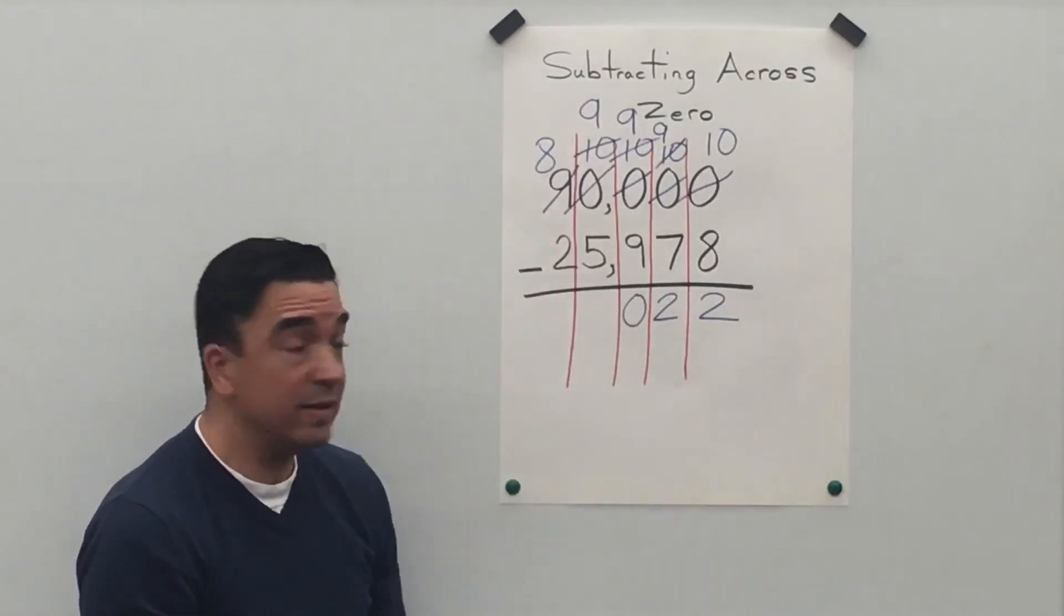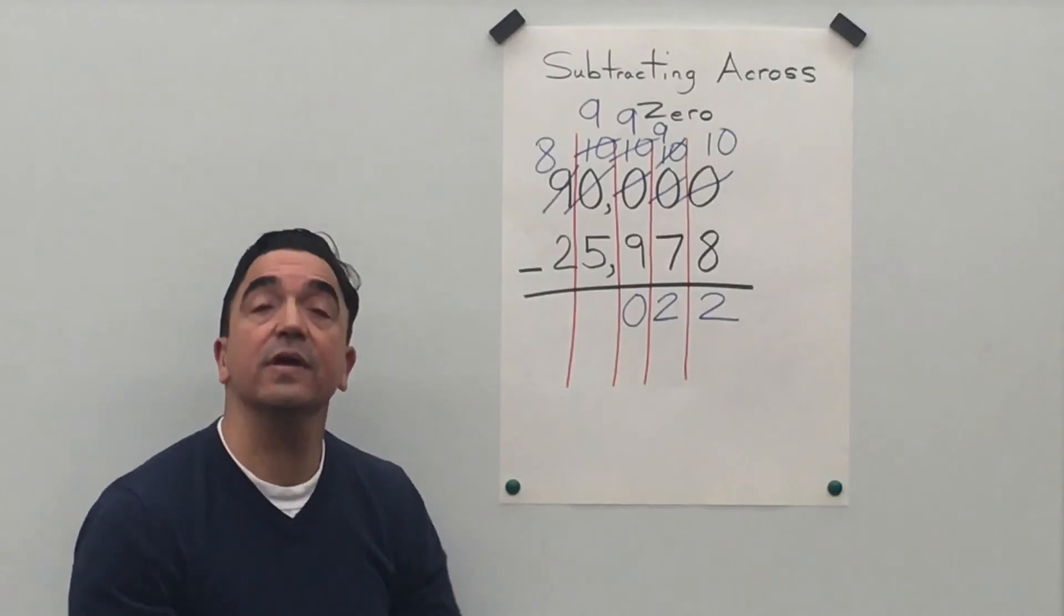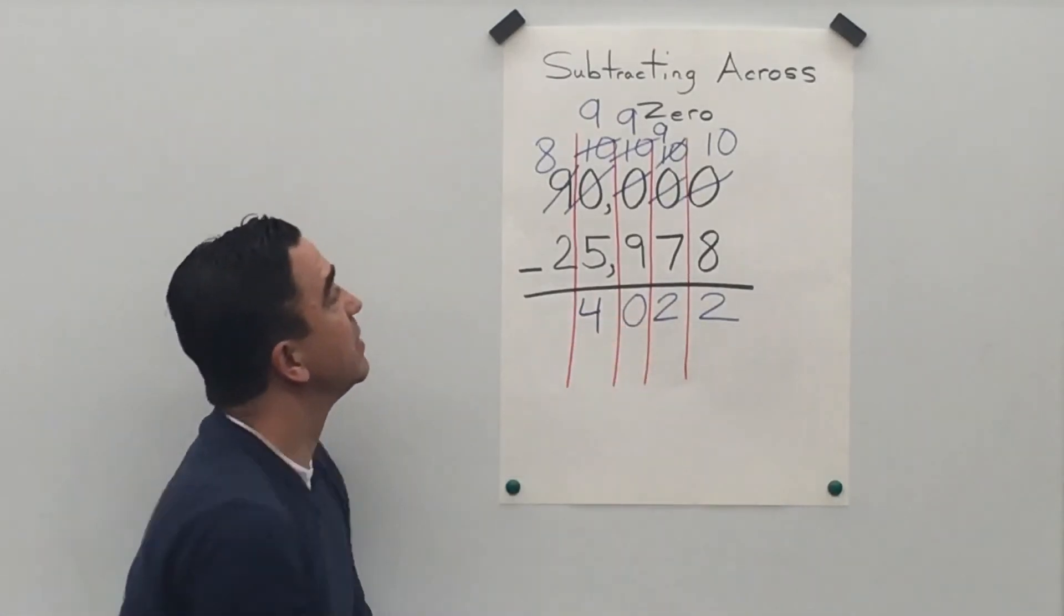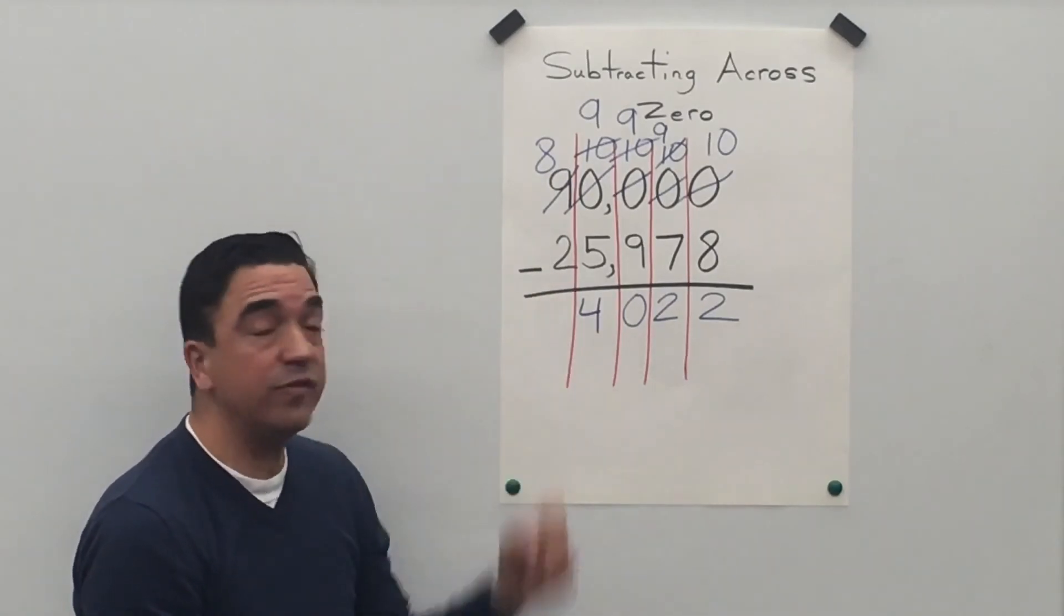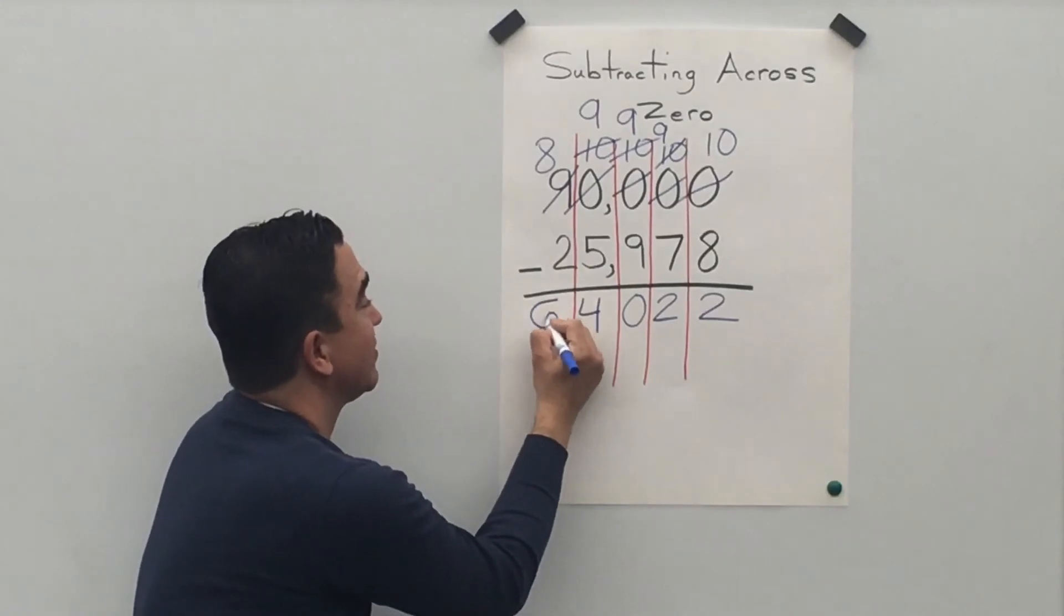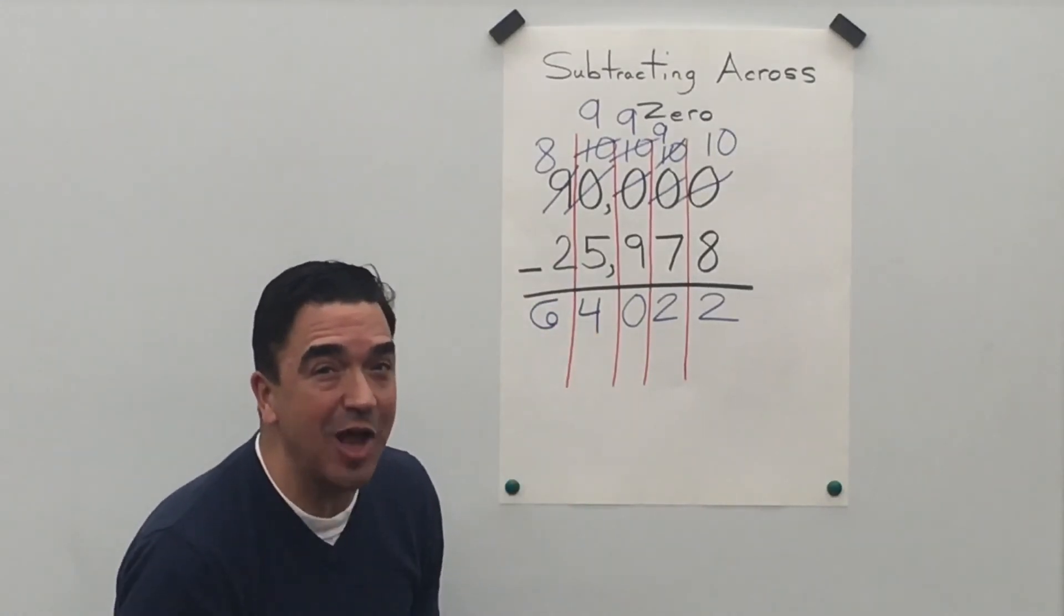Nine minus five is four. Eight minus two is six. Don't forget your comma.